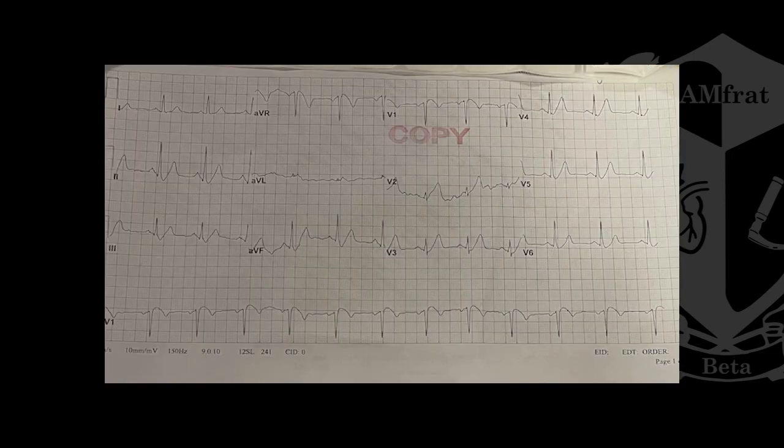Here's another example of a DeWinter's T wave. This patient presented with chest pain, arm pain, and shortness of breath, all of which were refractory to nitro. This was the 12-lead obtained just prior to the patient coding. They got ROSC, activated the cath lab, and sent the patient to cath. Unfortunately the cath results aren't available for this patient, but there were positive findings for coronary occlusion.